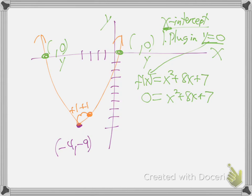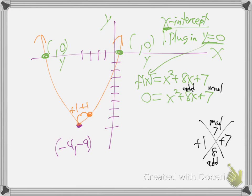How do I solve that equation for x? Do the diamond thing. What are two numbers that multiply to be seven and add to be eight? Multiply to be seven: one times seven. What signs do they need? Both positive - that way they'll add to be eight and multiply to be seven: plus one, plus seven. So we get zero equals x plus one, times x plus seven.